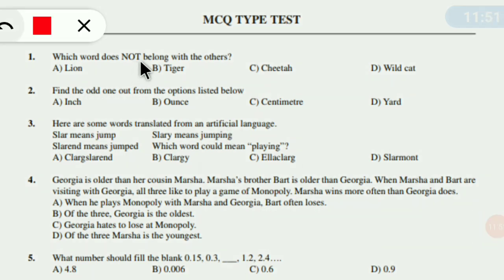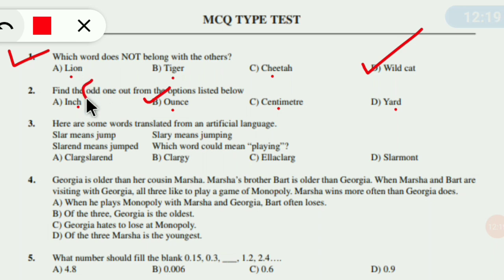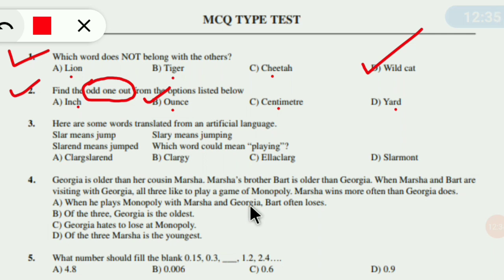Here's a sample MCQ: which word does not belong with the others? Lion, Tiger, Cheetah — same category. Answer D. Another question: find the odd option — Inch, Centimeter, Yard are measurement units, but one option is not a measurement unit, so that's the odd one out. I will give you this sample paper in the description box and solve it in the next video.